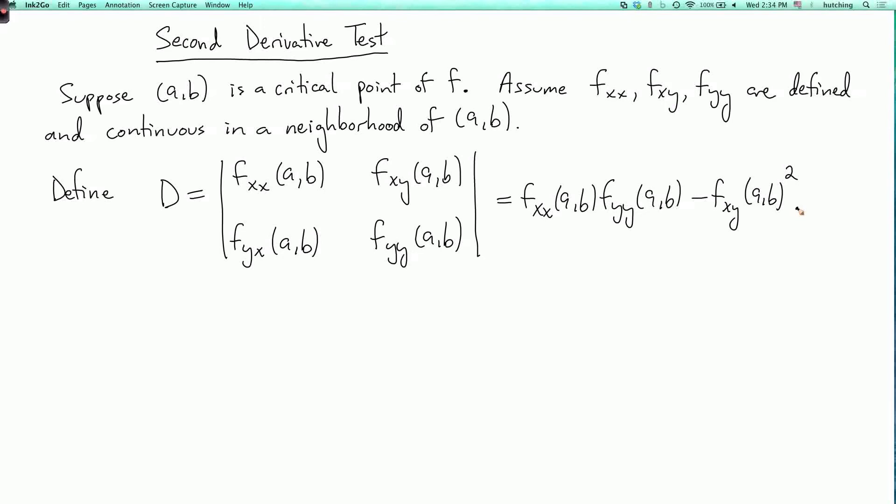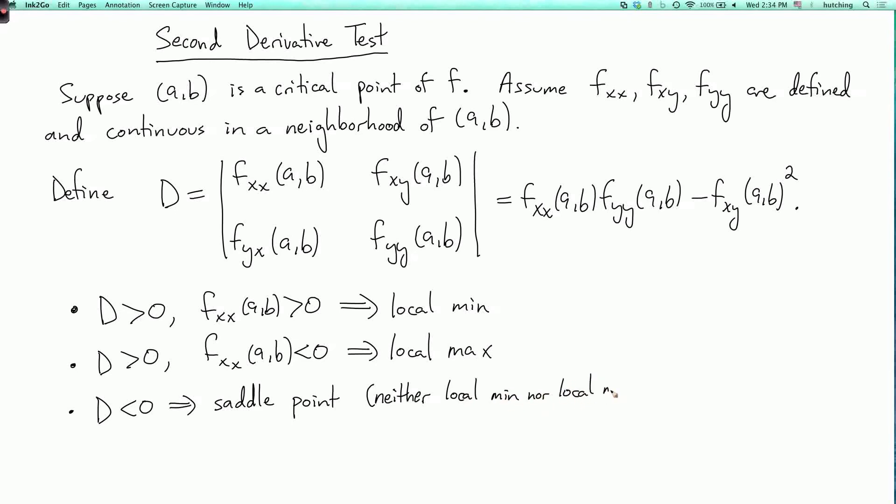And here's what the second derivative test says. If D is positive and if fxx at (a,b) is bigger than zero, then (a,b) is a local minimum. If D is greater than zero and fxx of (a,b) is less than zero, then it's a local max. If D is less than zero, then it's a saddle point, which is neither a local min nor a local max.